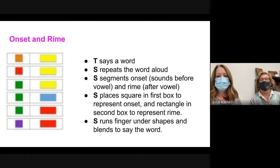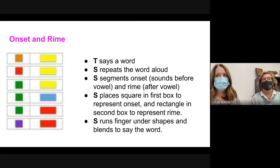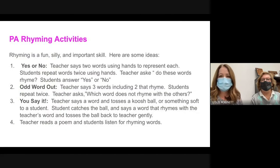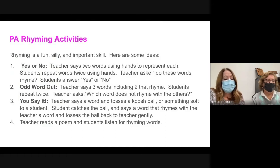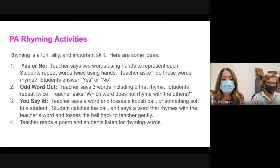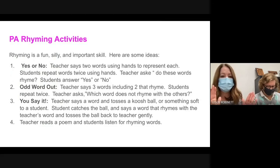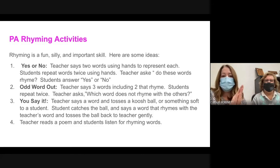On this slide is a graphic you can use with your class for onset and rhyme, or you can use a plain desk or whiteboard. The mat will be in your handouts at the Letters Unit 2 training. Another fun activity for PA is rhyming. Kids really like it because they can be silly, but it builds phonemic awareness. One easy approach: the teacher says two words using their hands to represent each word, students repeat the words, then ask, 'Do these words rhyme?' For example, 'ham and Sam — do they rhyme?' Students clap if yes or say no if they don't.